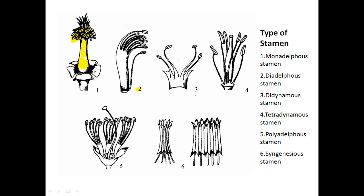In the second diagram, you can see nine stamens — one, two, three, four, five, six, seven, eight, and nine — all fused together in one bundle, and one stamen is separated. So there are two bundles: nine stamens fused together and one stamen separate. This kind of arrangement is known as diadelphous stamens.